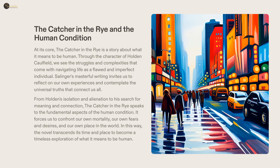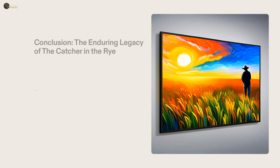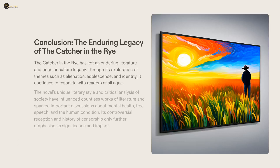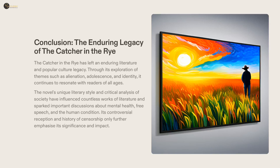Through Holden's story, readers have the chance to consider the difficulties of navigating life as an imperfect being and to recognize our commonality with each other. The Catcher in the Rye is widely regarded as one of the most influential novels of the 20th century. Its distinct literary style and exploration of the complexities of modern society have had an immense impact on popular culture, literature, and conversations around mental health, freedom of expression, and the human condition. Its key themes of alienation, coming of age, and self-discovery are still relevant to readers of all ages. Despite its uneasy reception and its long record of being subject to censorship, The Catcher in the Rye has continued to be a significant and lasting legacy.